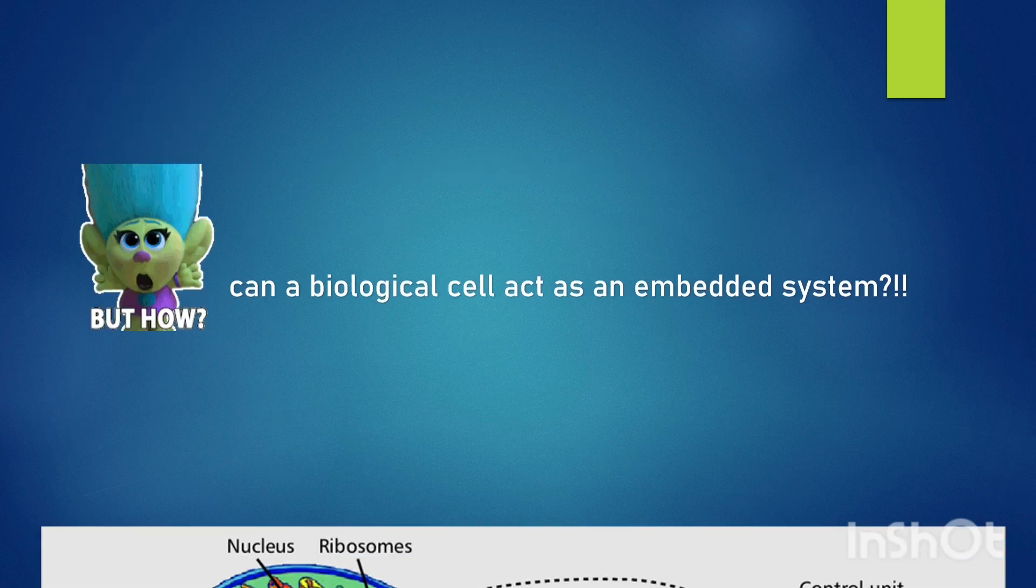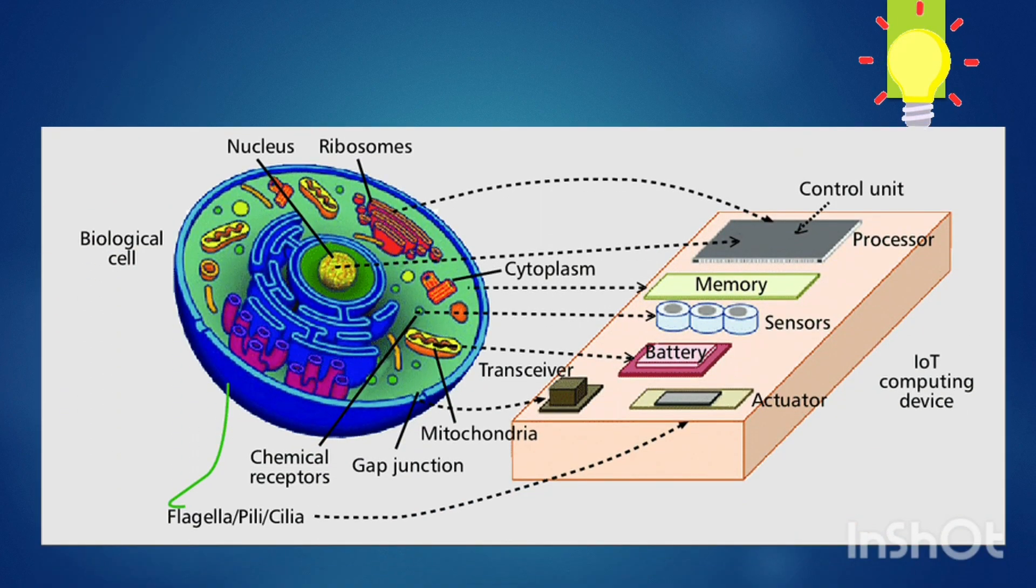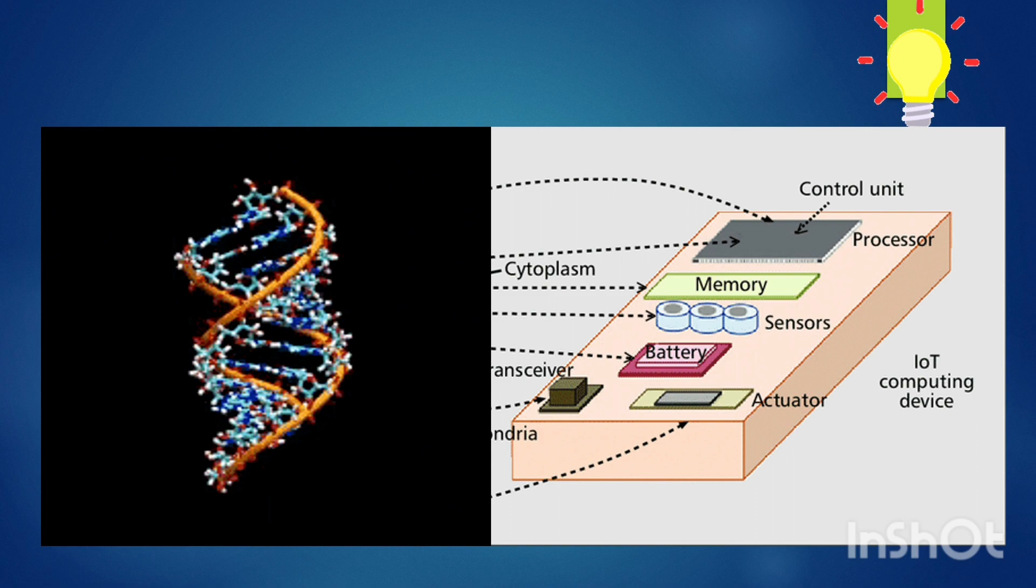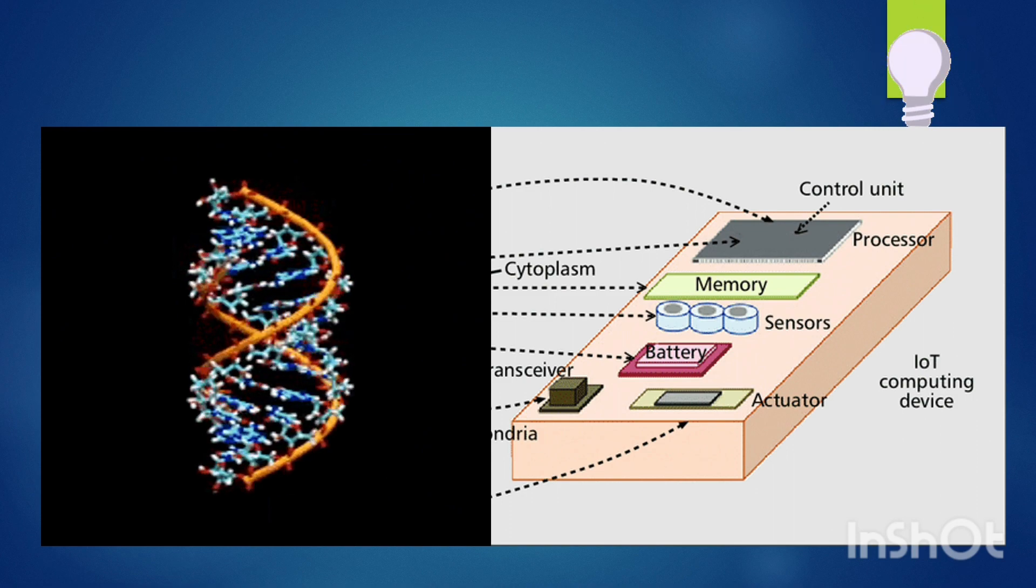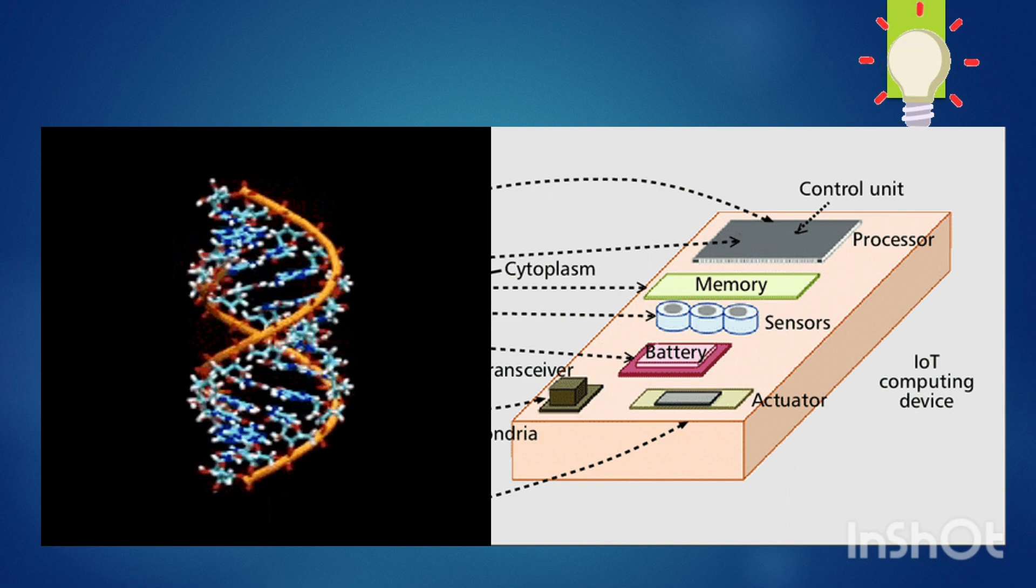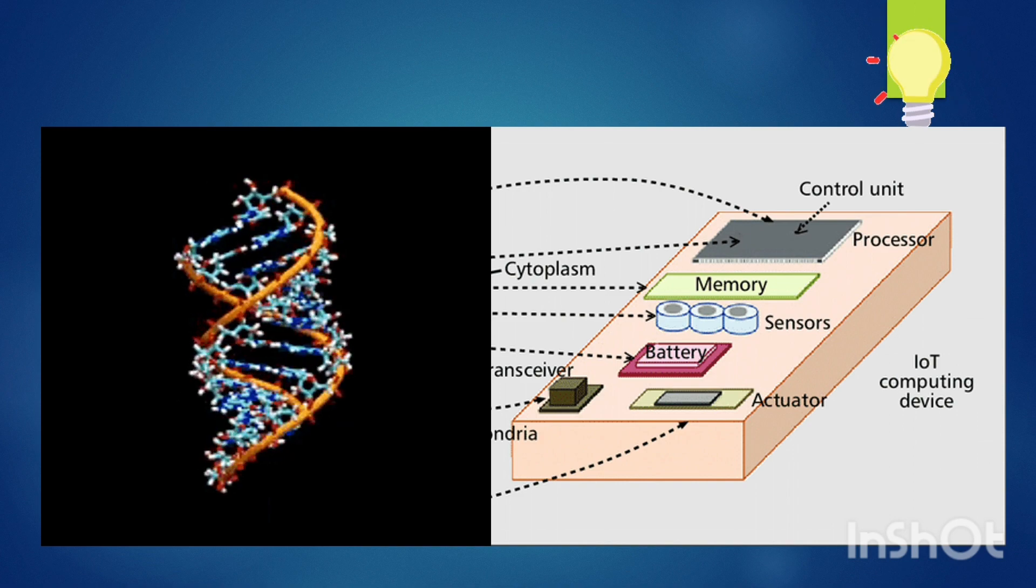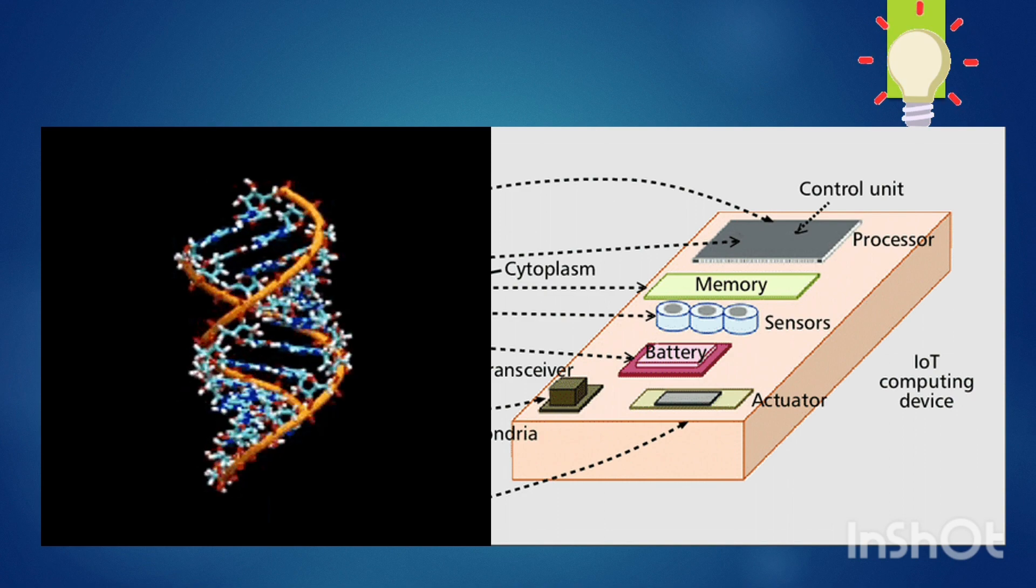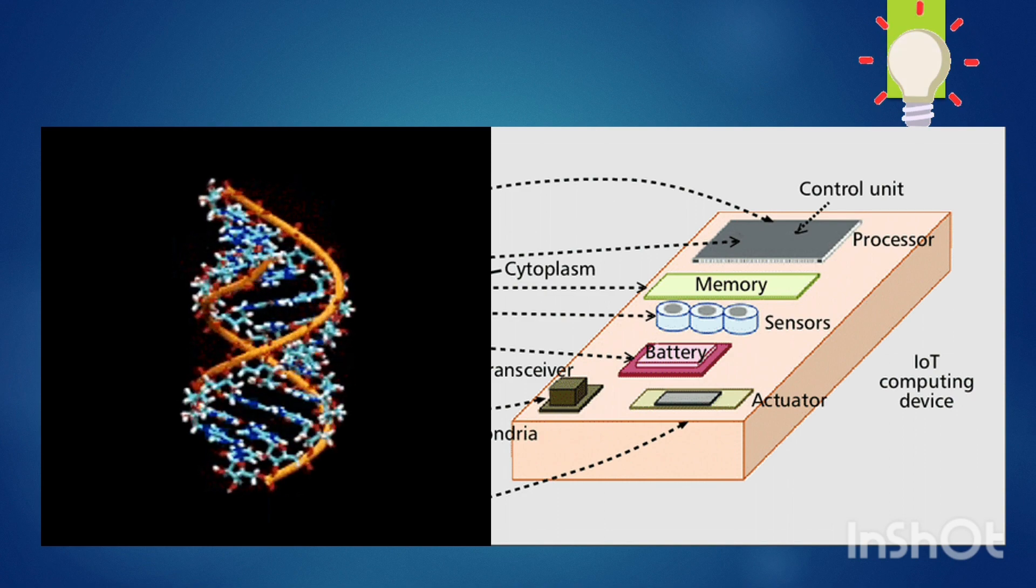If you observe closely, it has similar functionalities to a typical IoT device. The control unit contains the software and supervises the other parts, corresponding to the genetic instructions in the DNA molecule. Whatever data is created in the process is stored in the memory unit of the device. Similar to this is the chemical content of the cytoplasm, which consists of molecules synthesized as a result of the DNA's instructions.